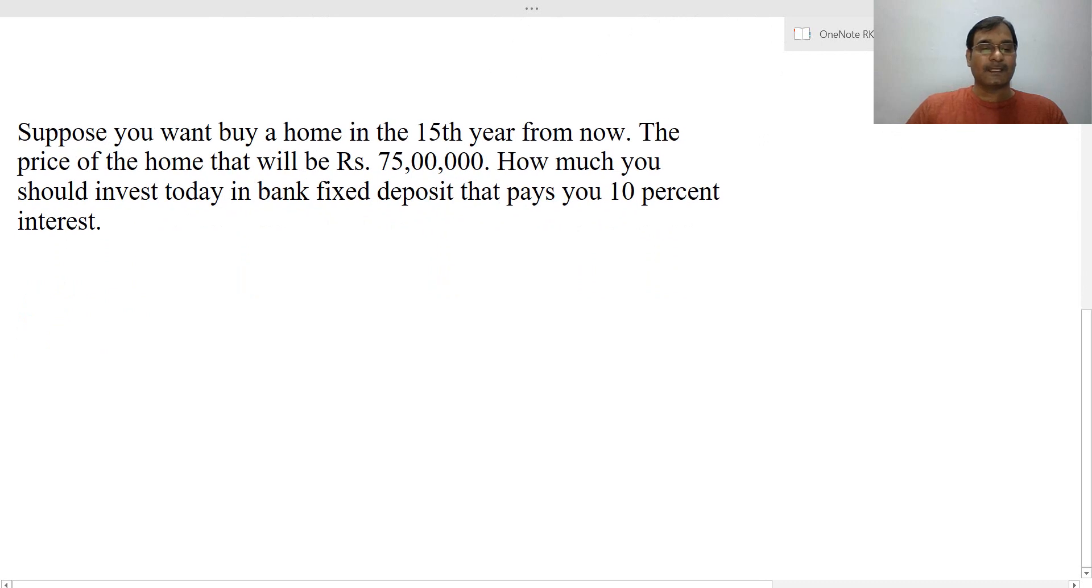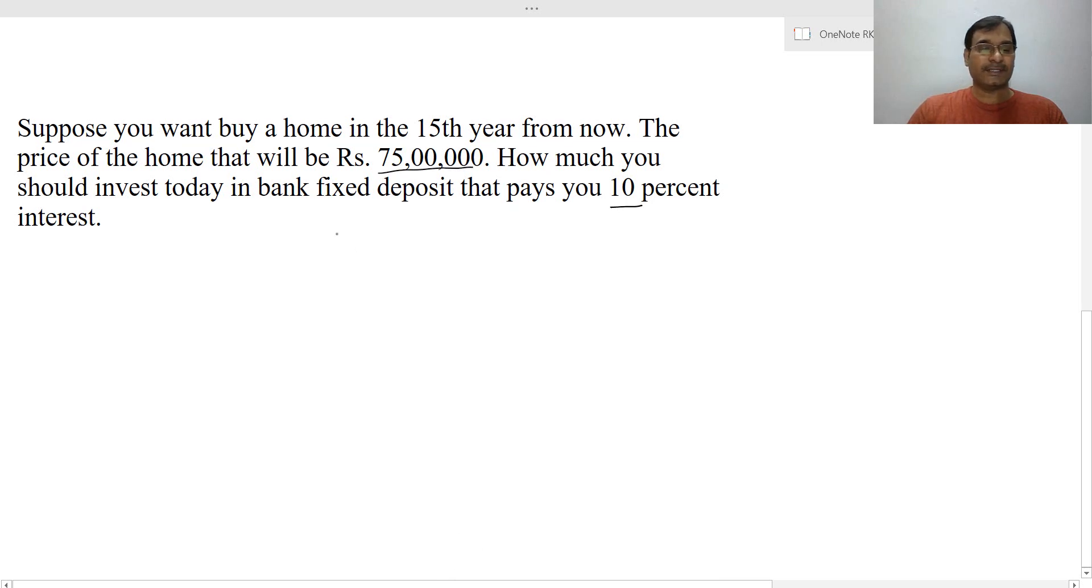Suppose you want to buy a home in the 15th year from now. The cost of home is 75 lakhs, i discount rate is 10 percent, and duration is 15 years. Then your PV present value equals to 75 lakhs divided by (1 + 0.10)^15.